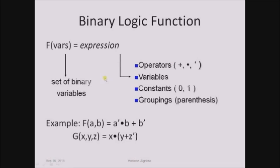What is a function? A function is used for representing the relationship between the input and output. In a binary function, the input contains binary variables and the output expression also involves binary variables. The notation is f of variables equals expression, where variables are binary variables that can hold only two elements, either 0 or 1, and the expression involves operators like plus, dot and complement.